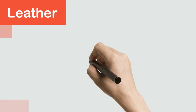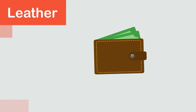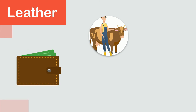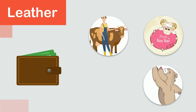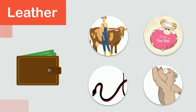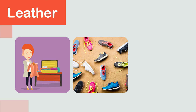Leather: we get leather from the skin of different animals like cows, sheep, bears, snakes, etc. It is a soft material that is thicker than fabric. Many objects are made from leather, such as jackets, shoes, and bags.